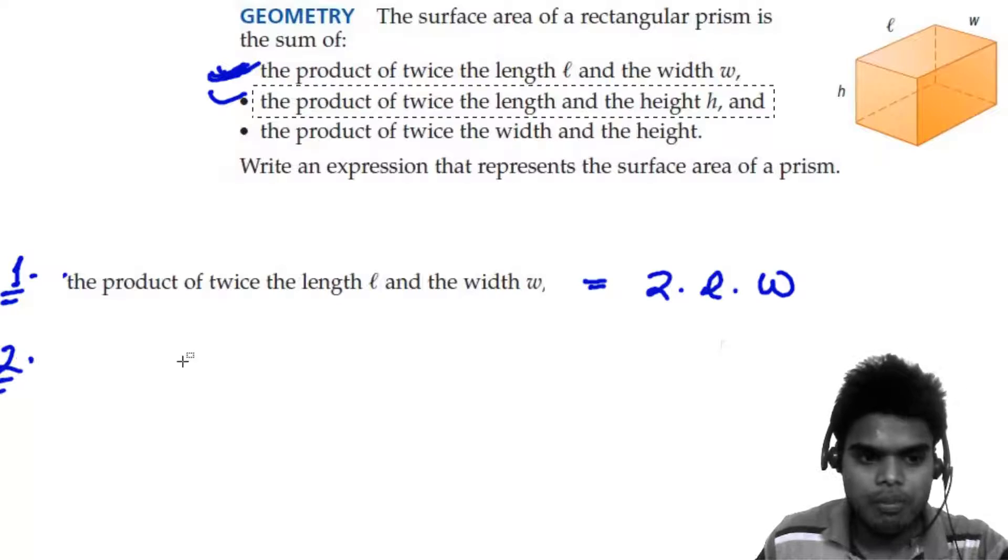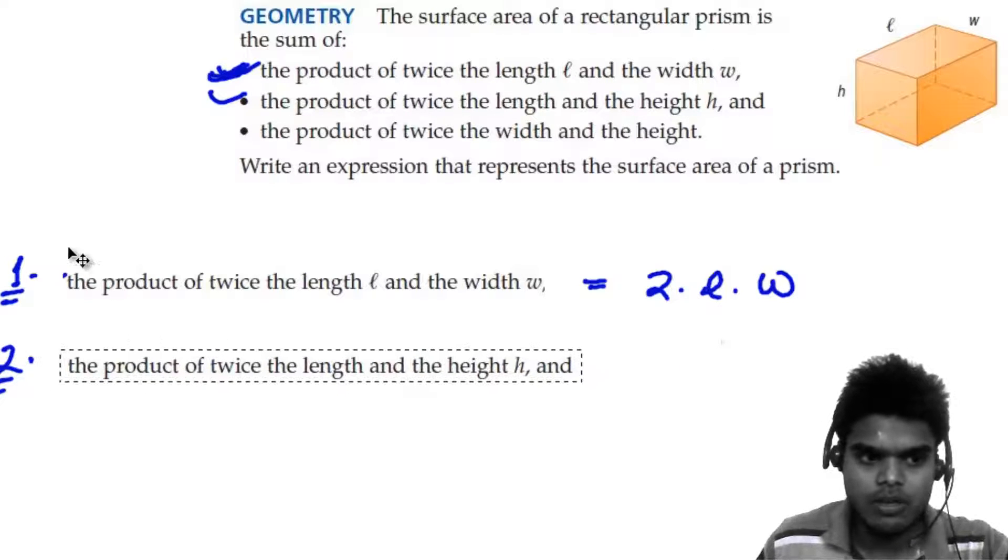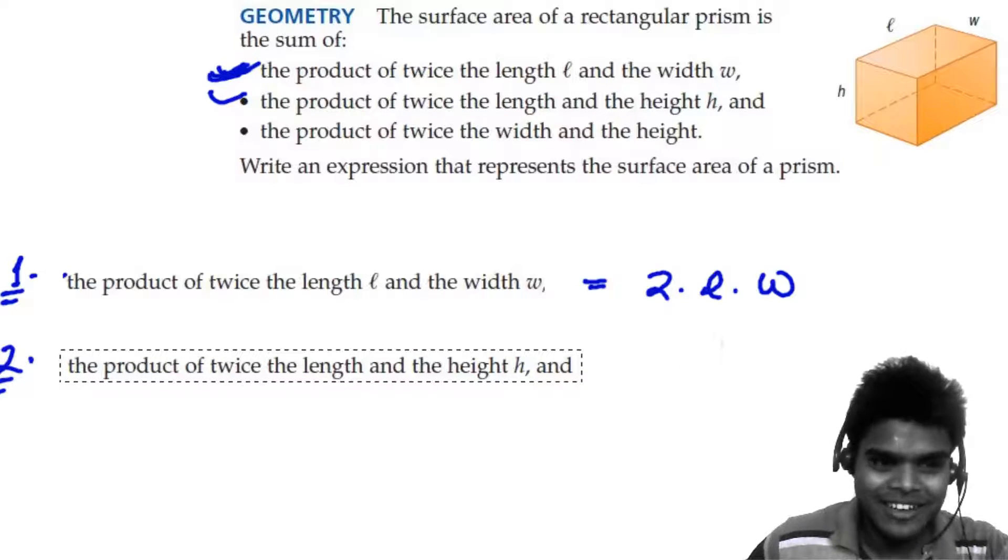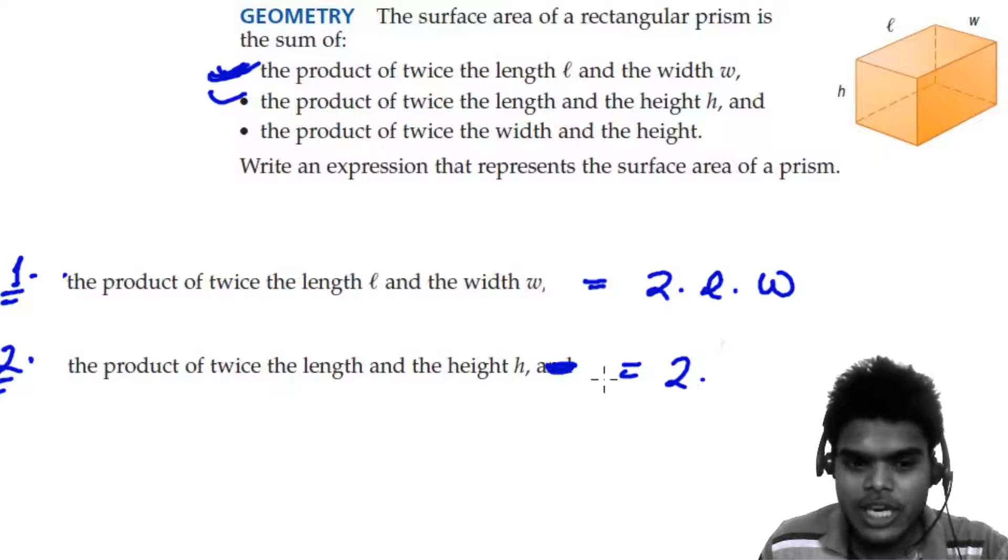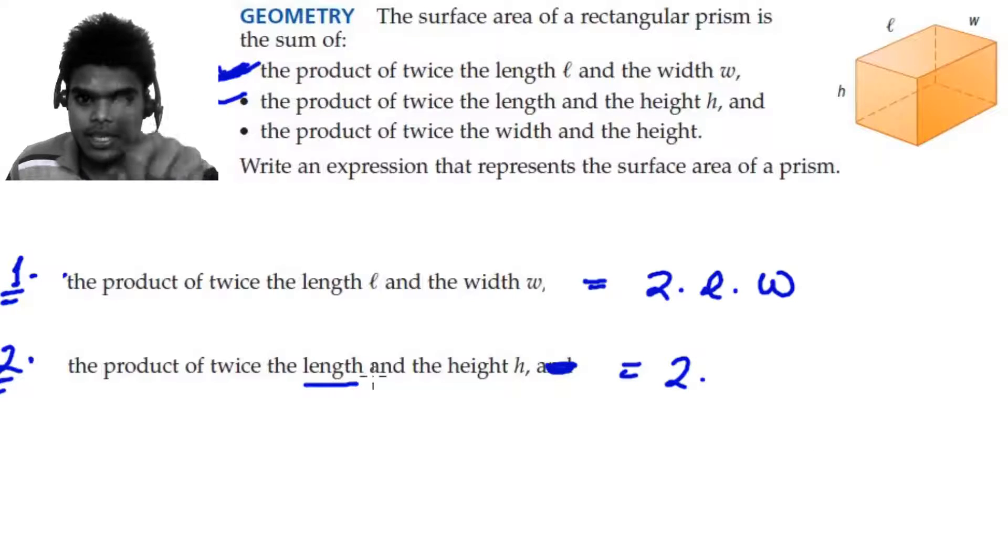Now let's go for the second one. Copy, paste, smart boy. Alright, so the product of twice the length and the height. We don't need this. So two times the length, which is L, and the height, which is H.